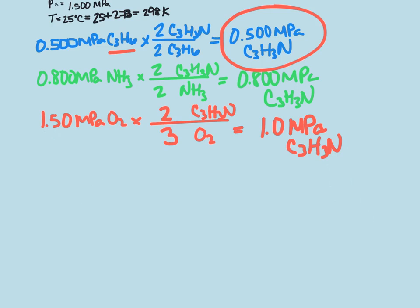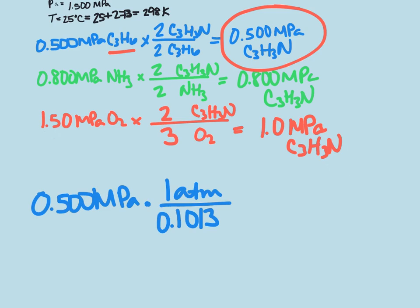Now that we know that's the one that's going to be determining how much we can produce, we can change our megapascals into ATM. So if we have 0.500 megapascals, we multiply that by 1 ATM is 0.1013 megapascals, and we'll get 4.936 ATM.